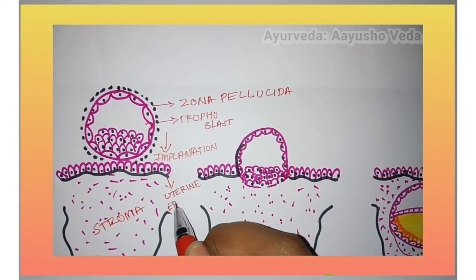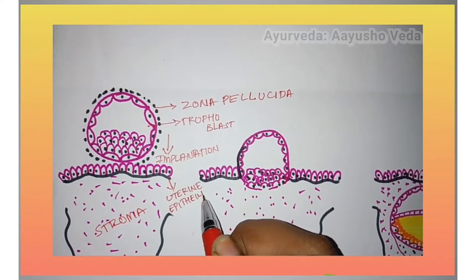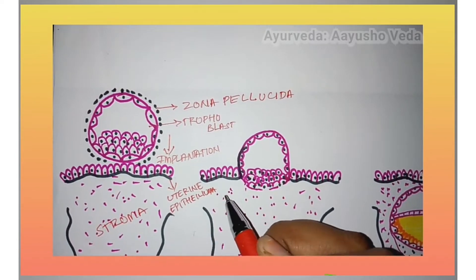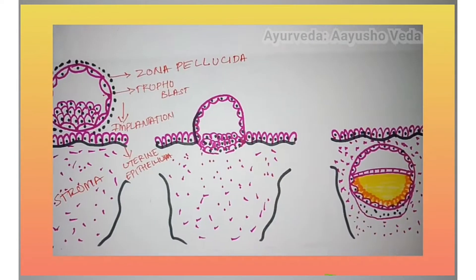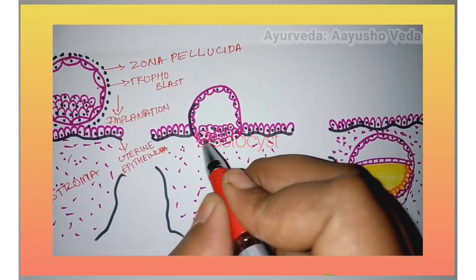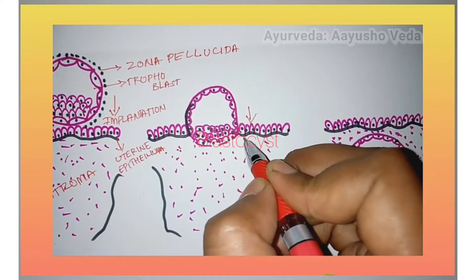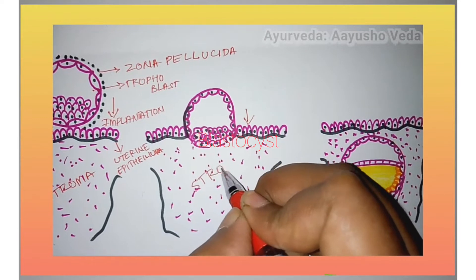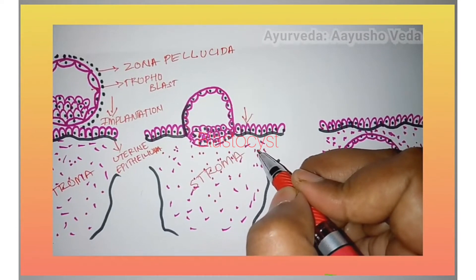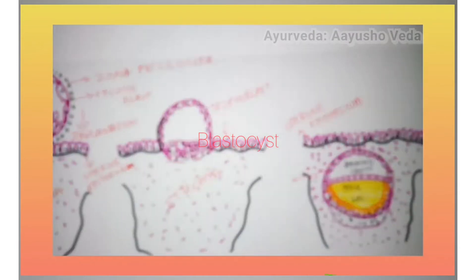The trophoblastic cells have a special tendency to attach to the surface with which they come in contact. Following implantation, the blastocyst will start to invade into the endometrium due to the action of these trophoblastic cells, invading into the uterine wall — that is, into the endometrium. By the end of the twelfth day of fertilization,